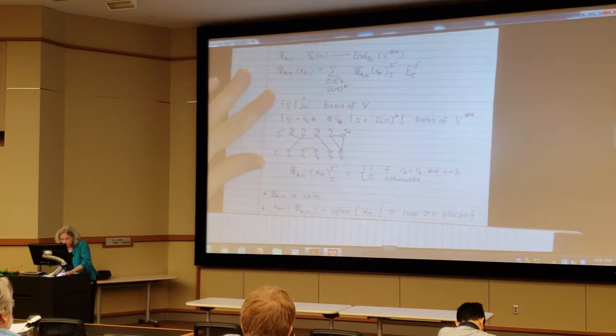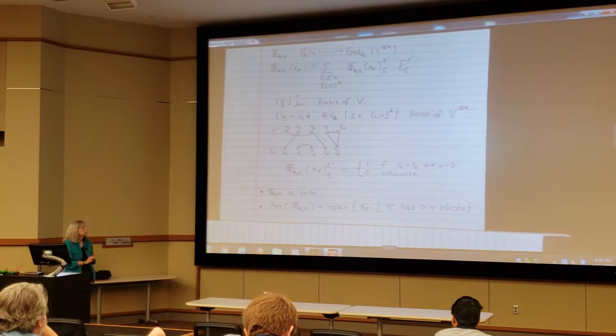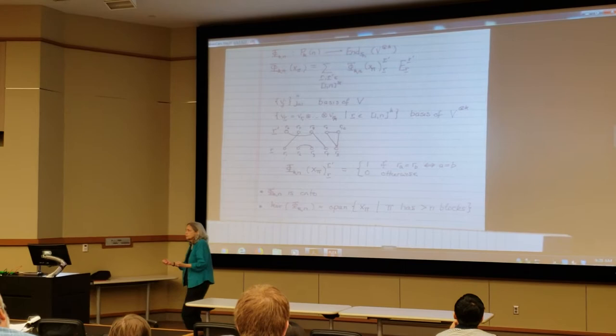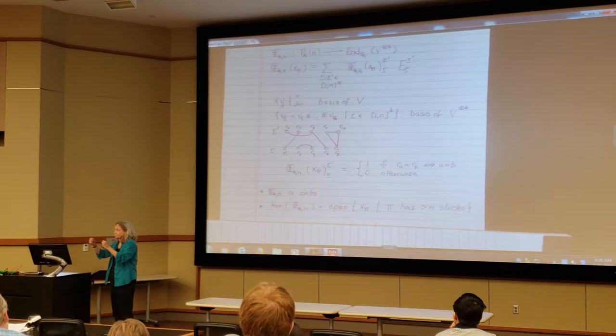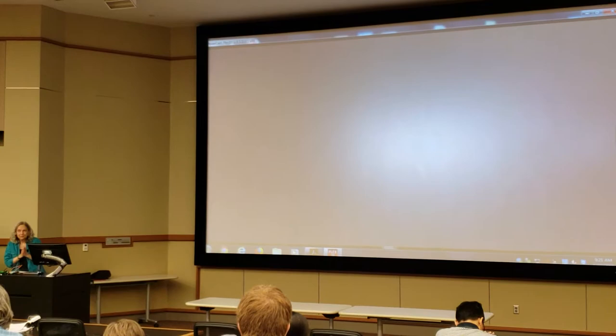And then every other one is an orbit obtained by applying an element of Sn to that one. So that's where the word orbit comes from, and that's his way of thinking that this is how this map is defined. So this transformation, in fact, is onto.